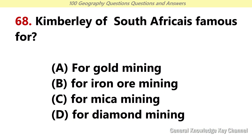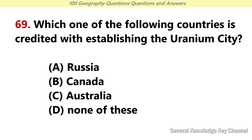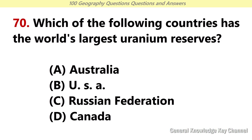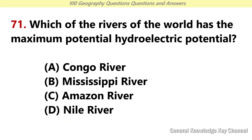Kimberley of South Africa is famous for? Answer D: Diamond mining. Which one of the following countries is credited with establishing the uranium city? Answer B: Canada. Which one of the following countries has the world's largest uranium reserves? Answer D: Canada. Which of the rivers of the world has the maximum hydroelectric potential? Answer A: Congo river.